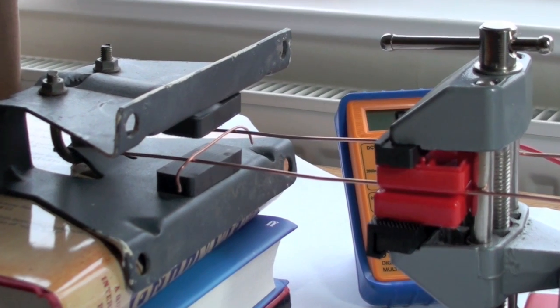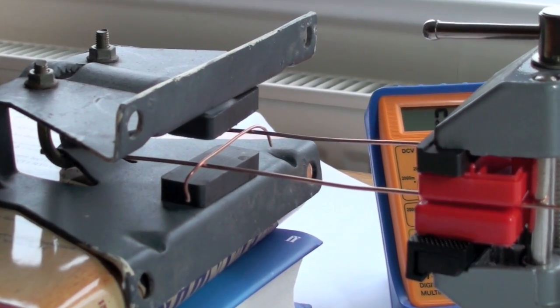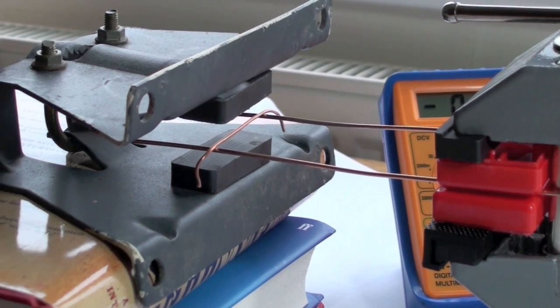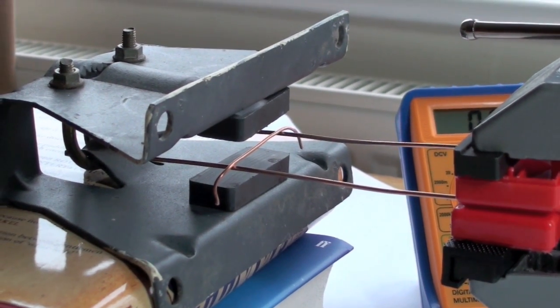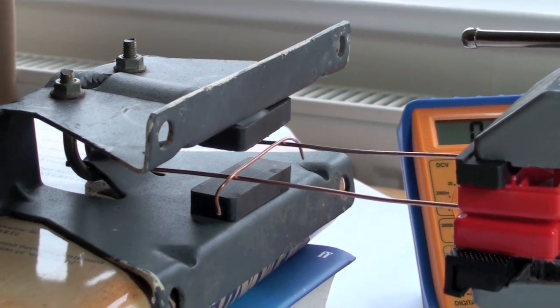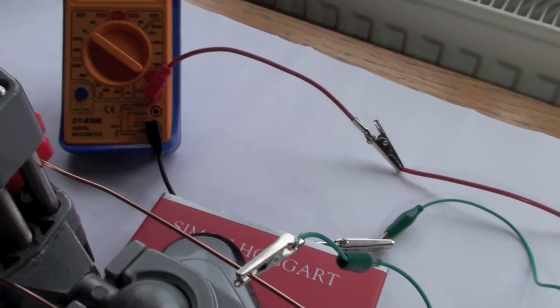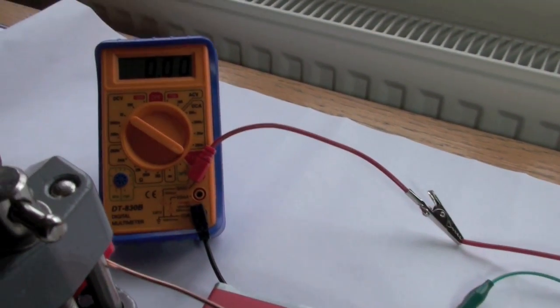Two straight copper rods connected by a piece of loose copper wire complete a simple series circuit which will carry a large direct current. The loose wire is resting between the poles of a magnet. There's also an ammeter in the circuit.